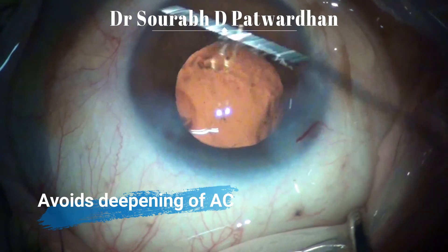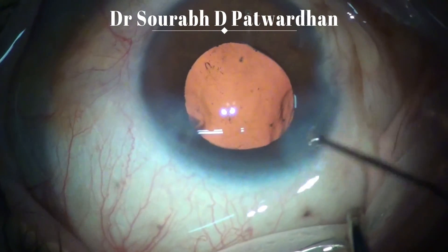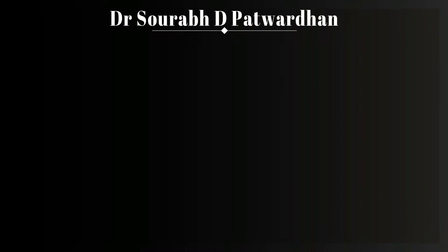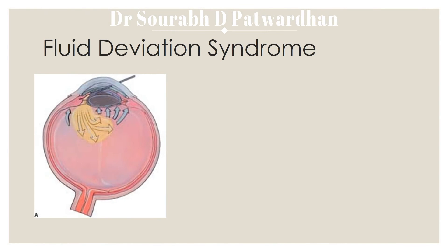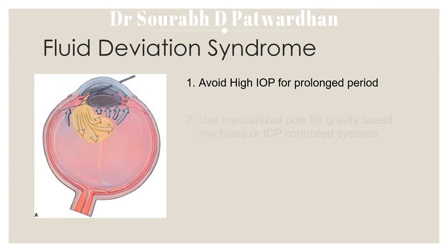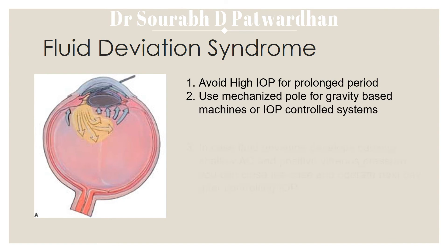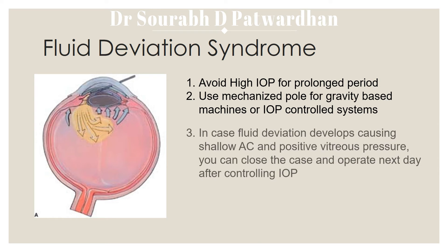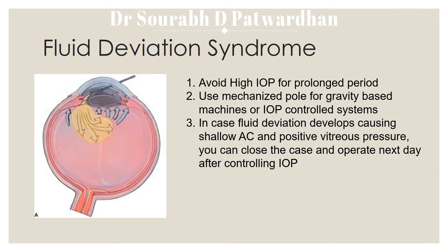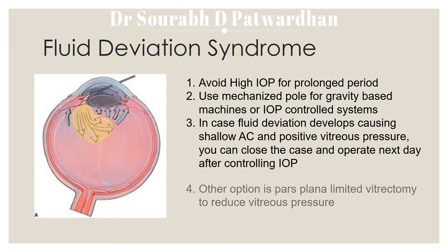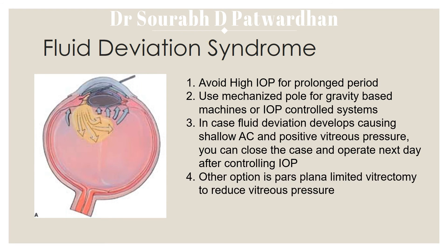Fluid deviation syndrome is also seen quite often with high myopia. It is important to avoid high IOP for a prolonged period during phaco; use a mechanized pole. In cases where fluid deviation develops causing a shallow anterior chamber and positive vitreous pressure, you can close the case and operate the next day after controlling IOP. Another option is performing a pars plana limited vitrectomy to reduce the vitreous pressure and complete the case.